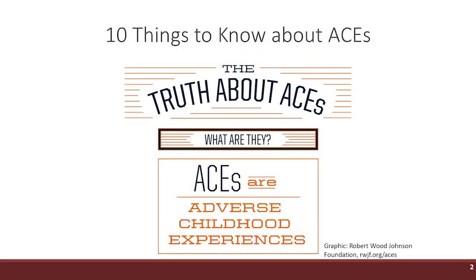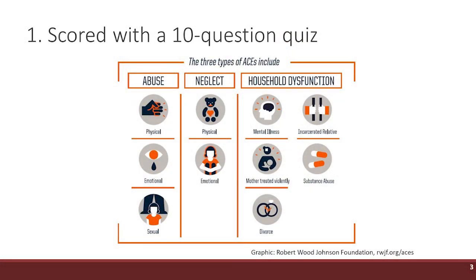Adverse childhood experiences. There has been a lot of research on ACEs and what they are. Some of you may have heard that there are 16 different types of ACEs, but the research is most compelling around these 10. So I am going to talk to you about these 10 things.